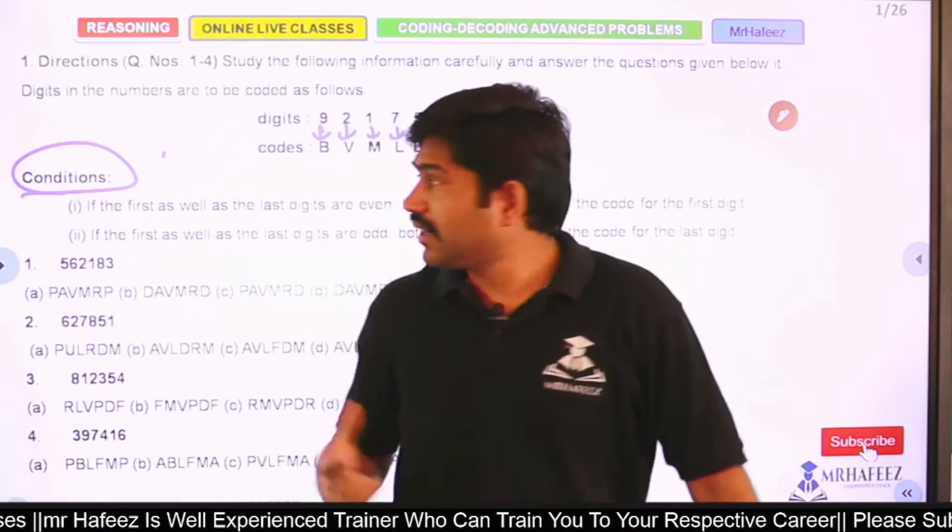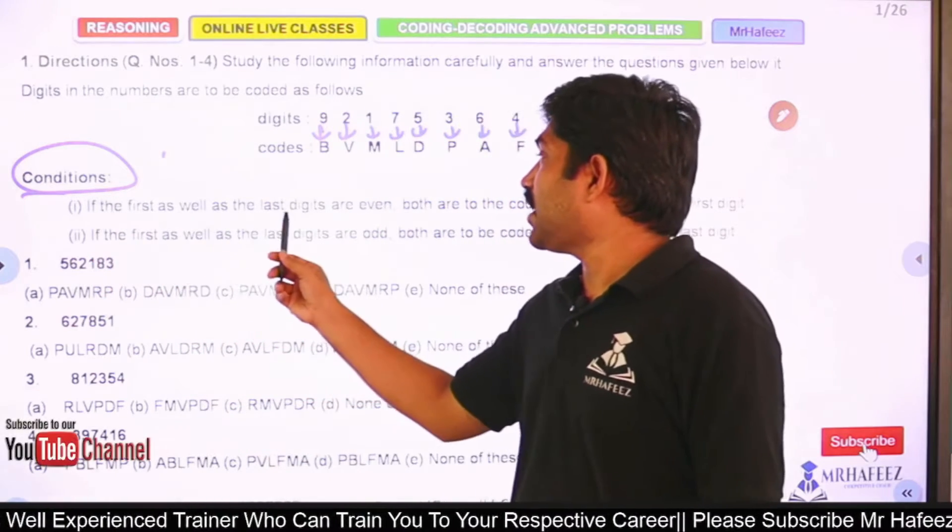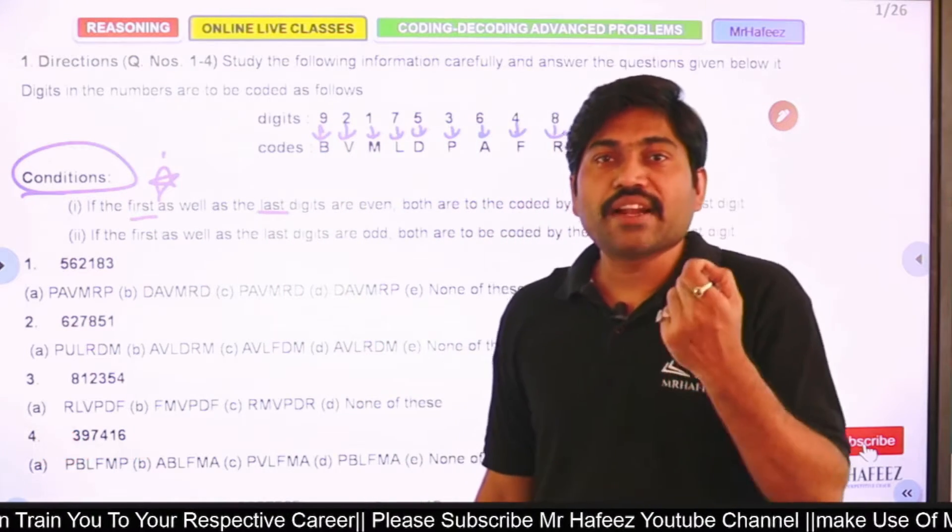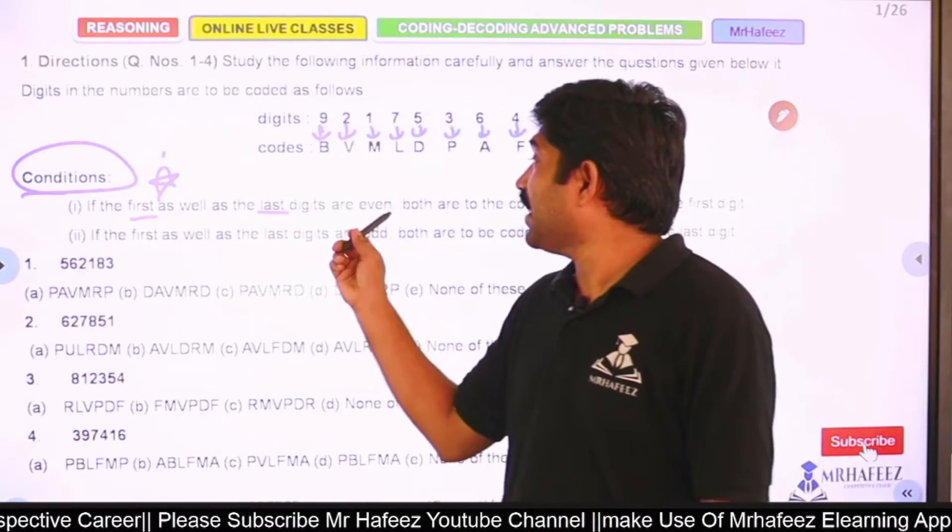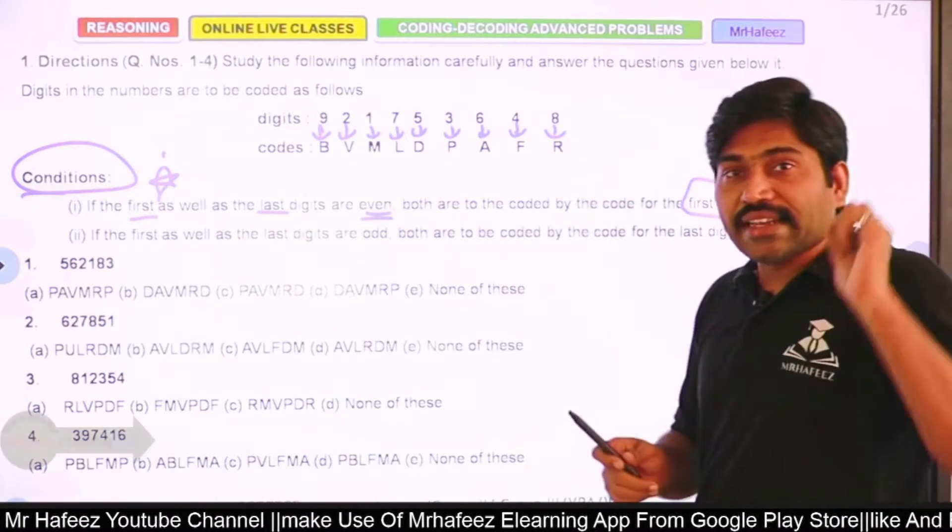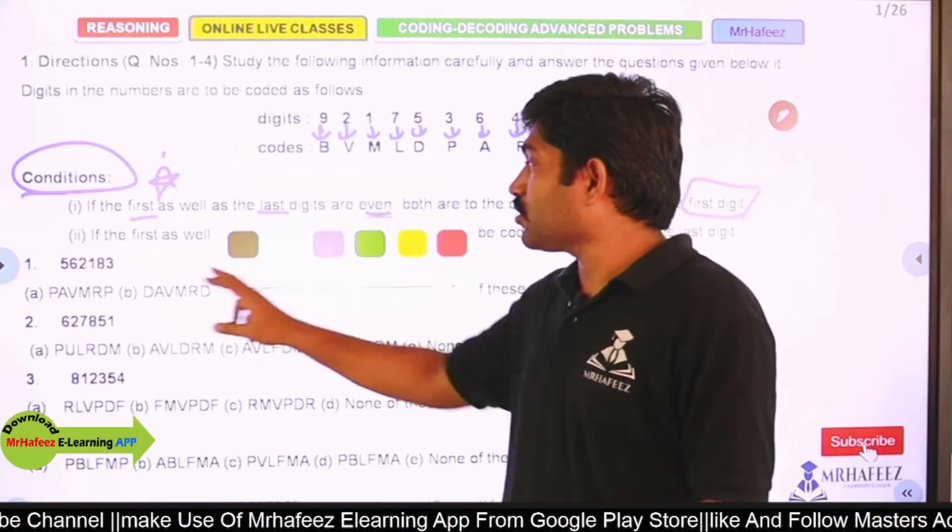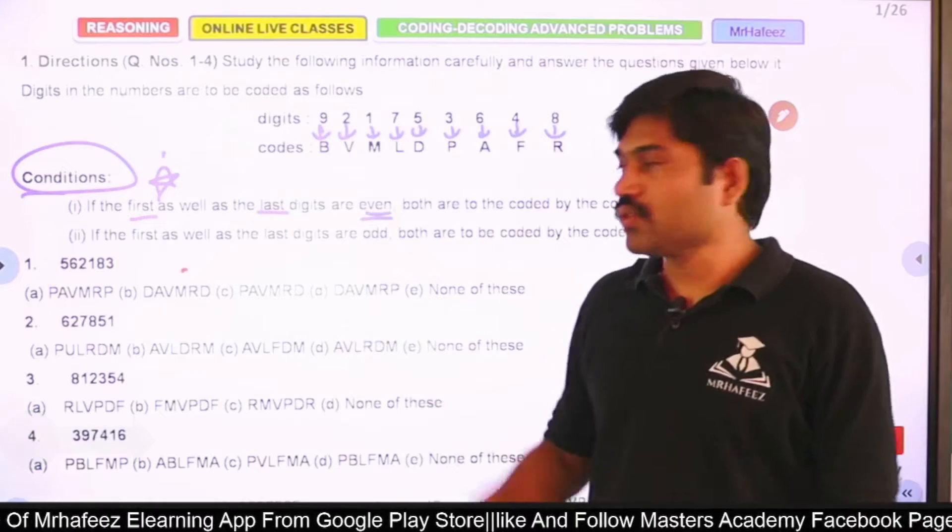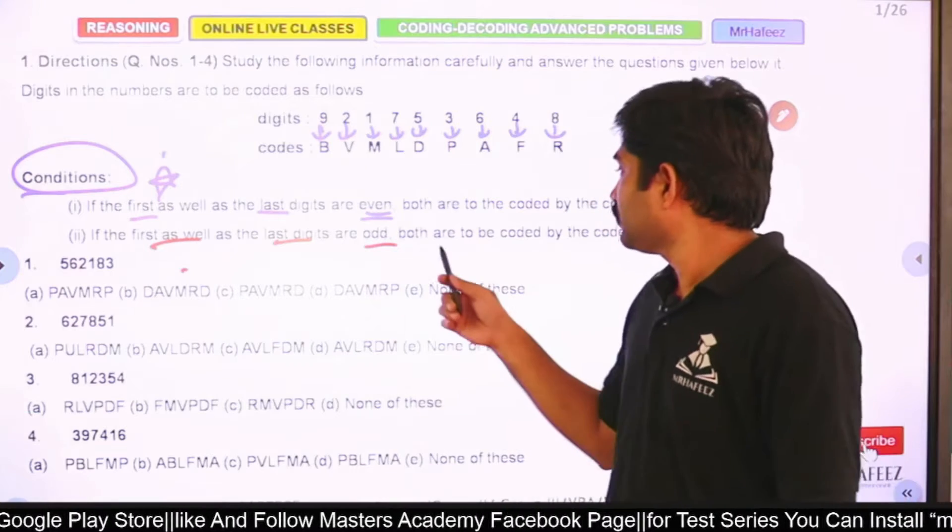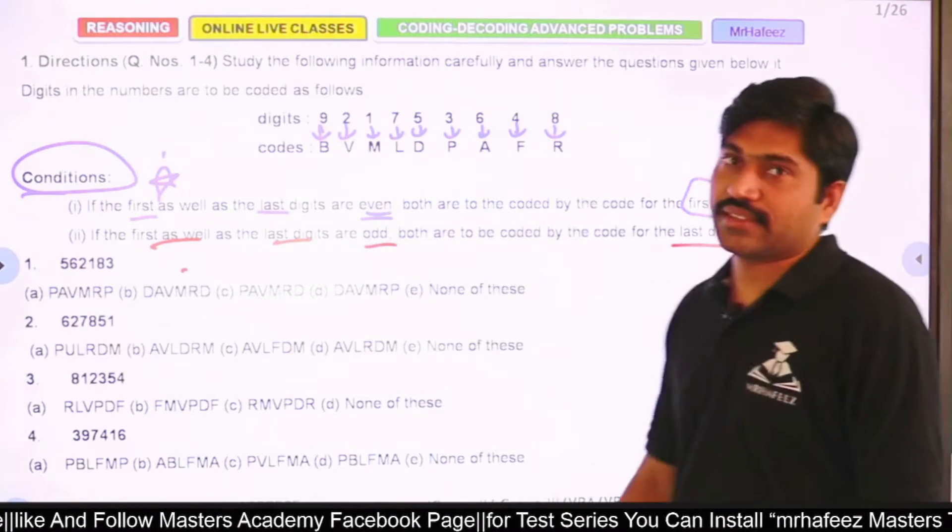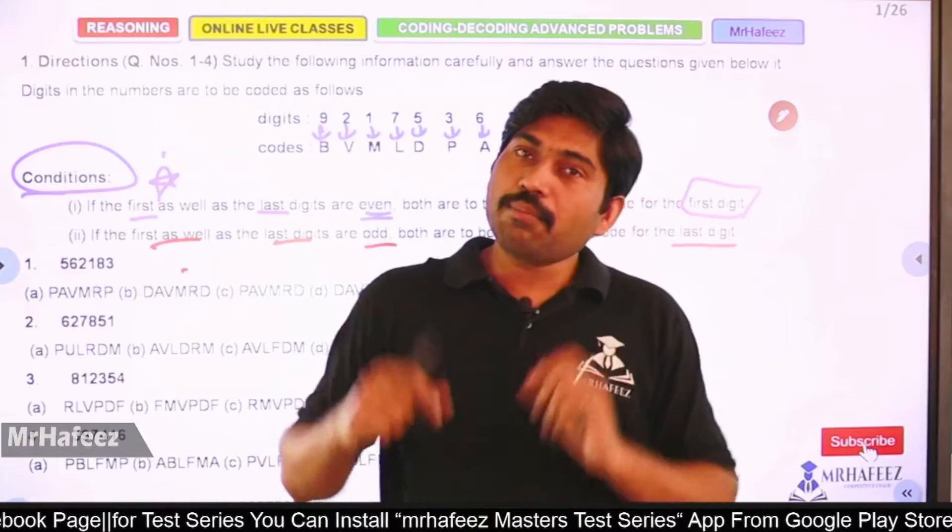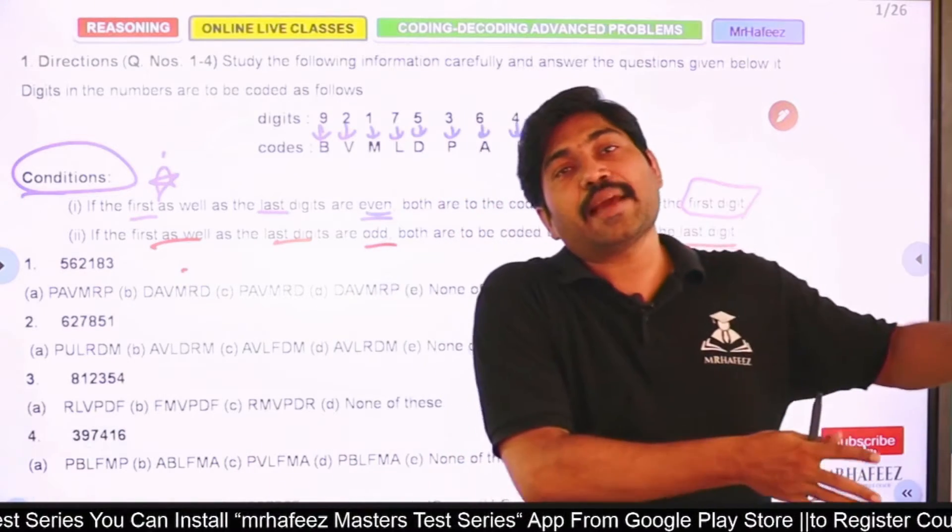Now the conditions: if the first as well as the last digits are even, both are to be coded as the first digit. Second condition: if first as well as the last digit are odd, both are to be coded as the last digit. If even numbers are present, use first digit code; if odd numbers are present, use last digit code.